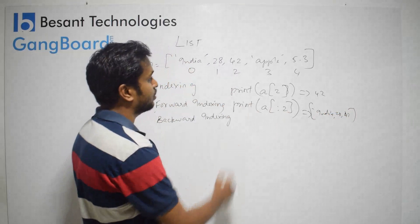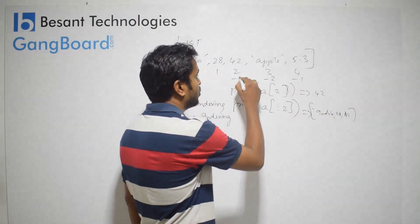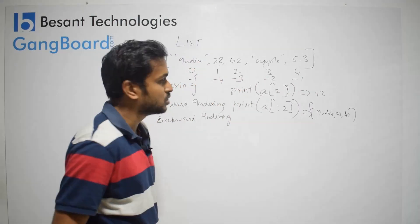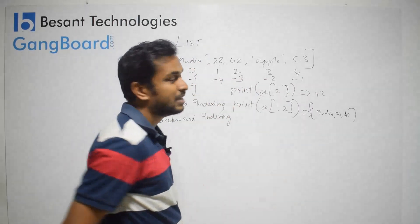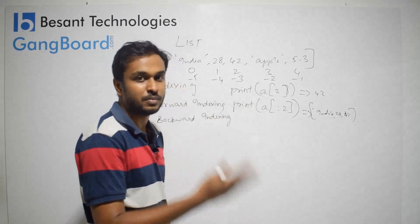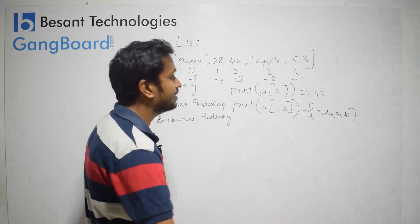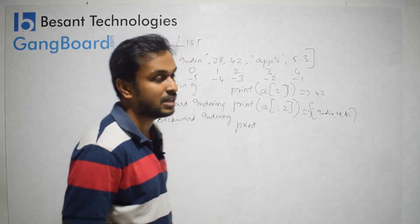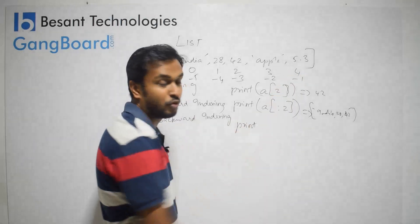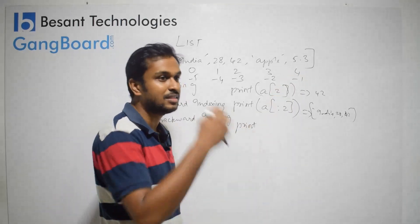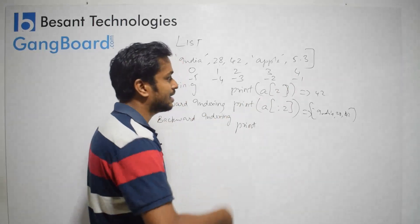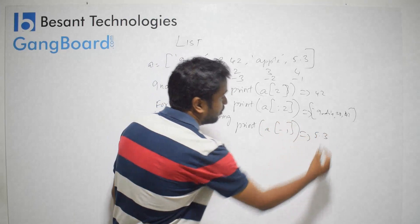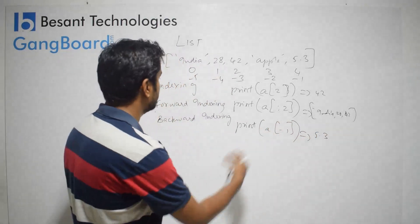This is the backward indexing concept, also called negative indexing — minus 1, minus 2, minus 3, minus 4, minus 5. By default, Python automatically assigns both forward and backward indexes. If you want to start from the beginning, use forward indexing. If you want to access from the end, you can use backward or negative indexing. For example, if I don't know the length of the list, I can access a[-1] and it will automatically give 5.3 as the output, which is the last item.